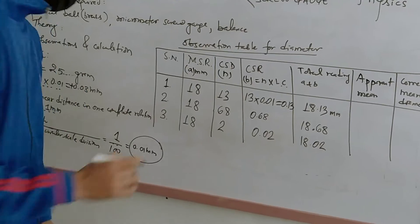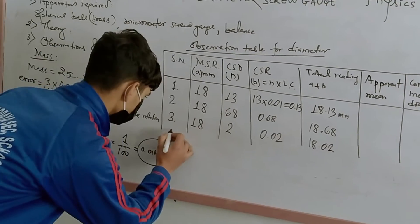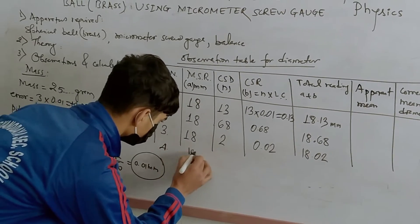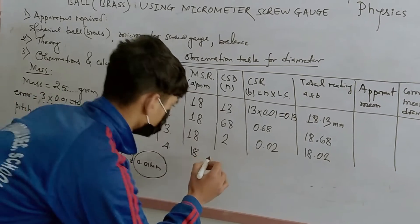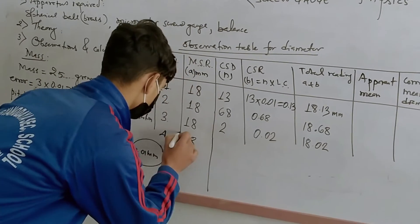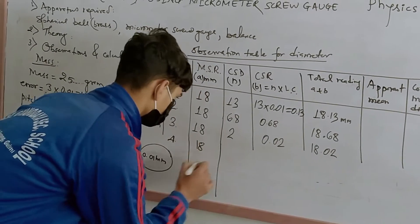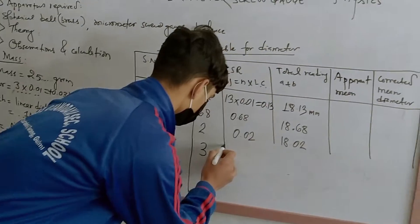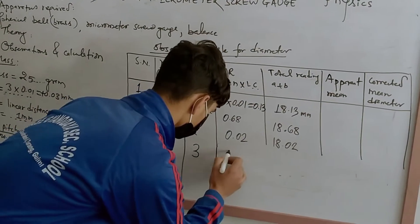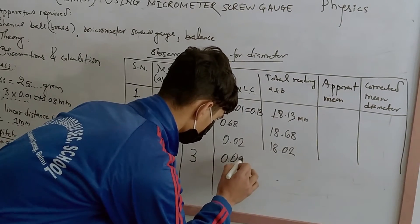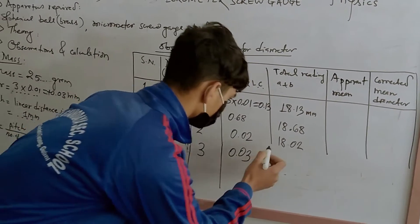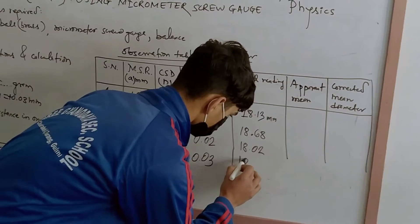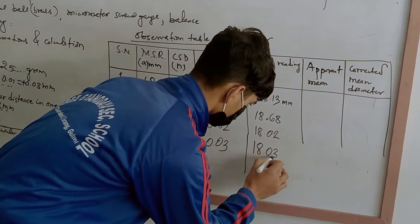For the fourth reading, the main scale reading is 18 to 19, and the circular scale division is 3, so 0.03 mm — list count multiplied gives 0.03 mm — giving 18.03 mm.